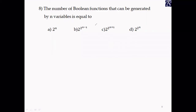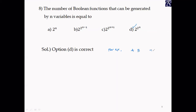Problem 8: We need to find the number of Boolean functions that can be generated by n variables. The answer is 2^(2^n) — option D is correct. For example, with two variables (n = 2): 2^(2^2) = 2^4 = 16 Boolean functions can be generated by two variables.